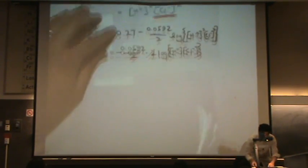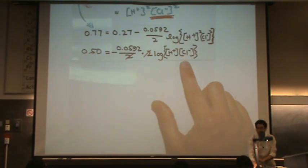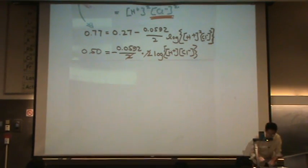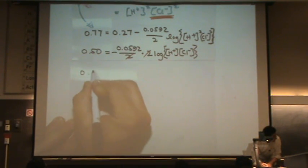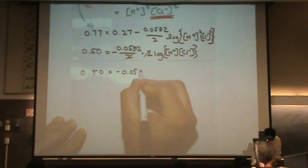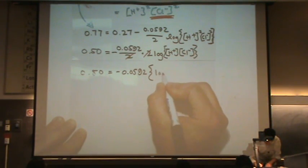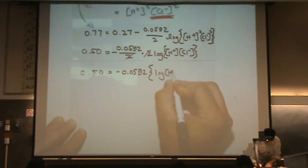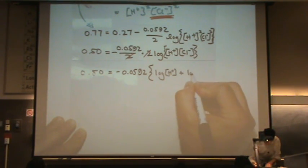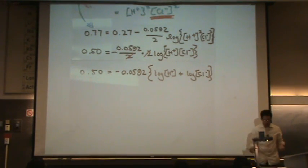The log of a product of the argument becomes the sum of the logs of each argument. So that's 0.50 equals negative 0.0592 times the log of H plus, plus the log of CL minus. Again, if you're not comfortable with logarithms, you could have just plugged the numbers in by this point.